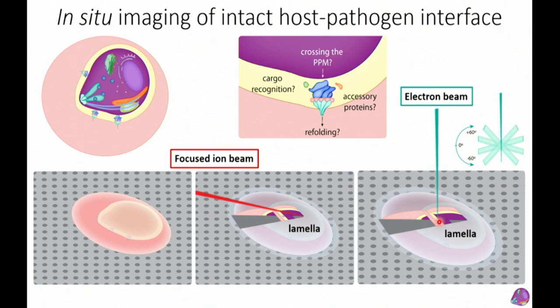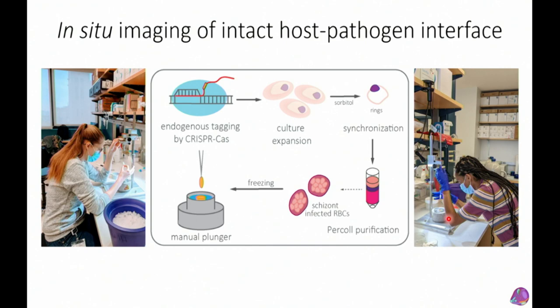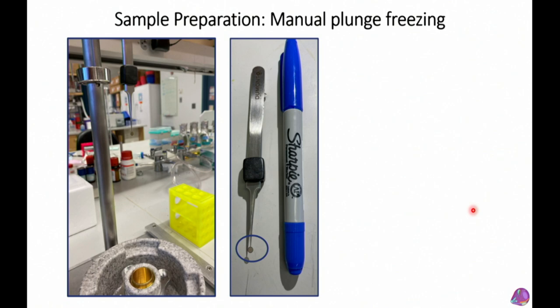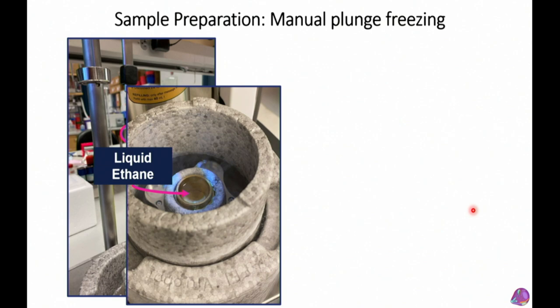We thin down to a lamella about 200 nanometers thick, then transfer it to the transmission electron microscope for tilt series. In the lab, David harvests parasites, applies them to the grid, attaches the tweezers to the manual plunger, wicks away excess sample with blotting paper leaving a thin cell layer, then plunges down into liquid ethane to vitrify — freezing so quickly that crystalline ice doesn't form.